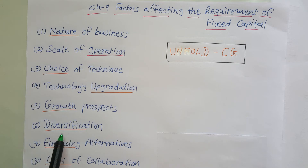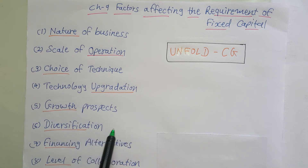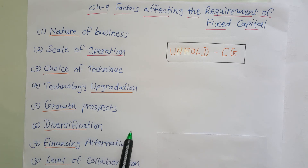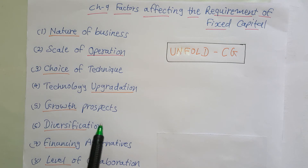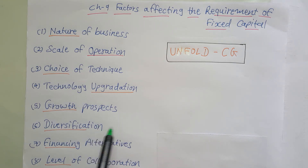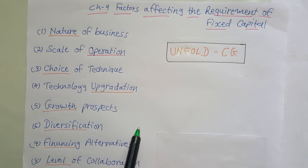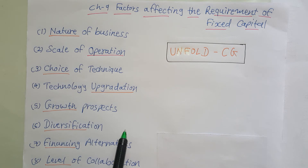Next is diversification. A company may go for diversification in its operations for various reasons, and with this diversification the fixed capital requirement also increases. For example, if you are in the textile industry and you are diversifying by starting cement manufacturing as well, this will obviously increase your investment in fixed capital.